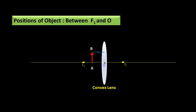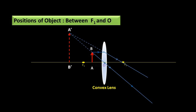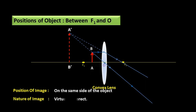Position of object between focus and optical center. AB is the object. The incident ray is parallel to the principal axis and, as per rule, it passes through the focus after refraction. Another incident ray passes through the optical center without any deviation. These two refracted rays do not cross each other — there is no image formation behind the lens. But when we extend these lines towards the object side, they meet at a single point. This is the position of image A'B', which is an imaginary — virtual — image. Position of image: on the same side as the object. Nature of image: virtual and erect. Size of image: magnified.